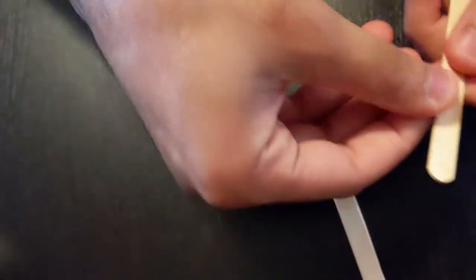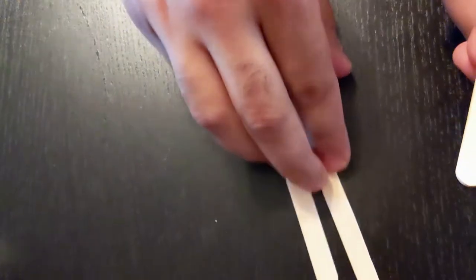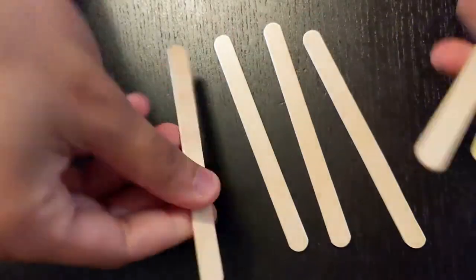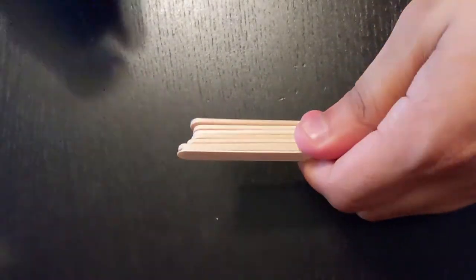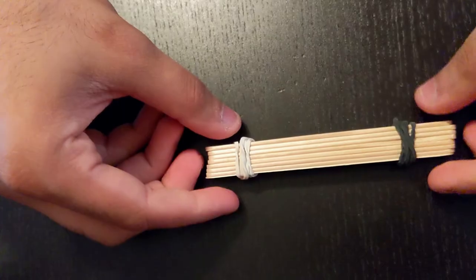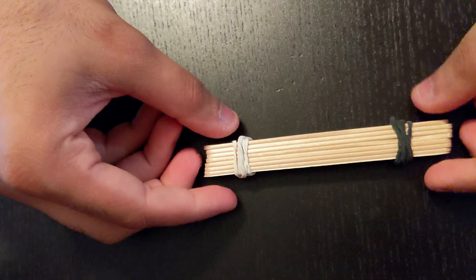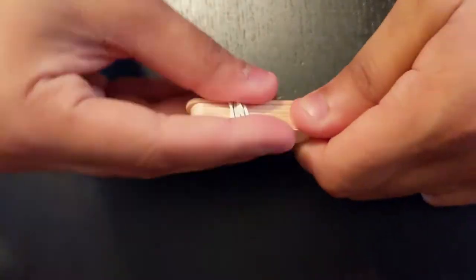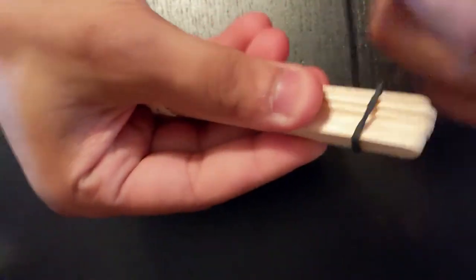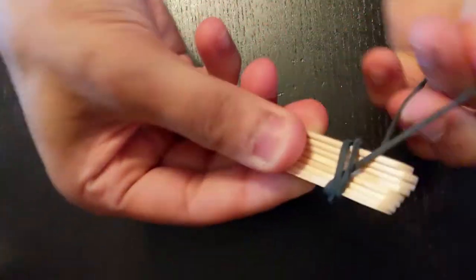Your first step will be to make a stack of eight popsicle sticks. Your next step will be to wrap a rubber band on either side of your stack to hold the stack of eight popsicle sticks together. Make sure you've wrapped the rubber bands as many times as you can on each side so it's nice and tight.